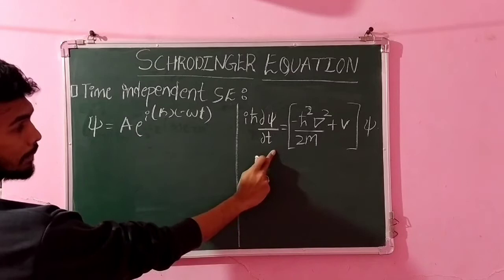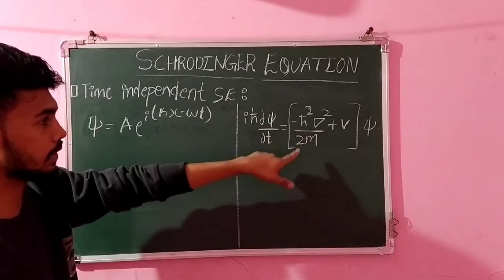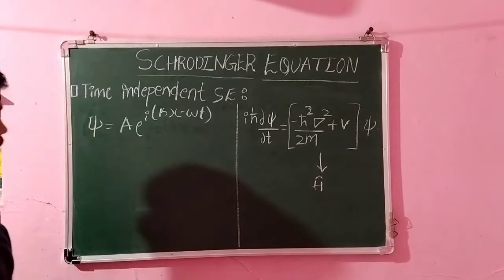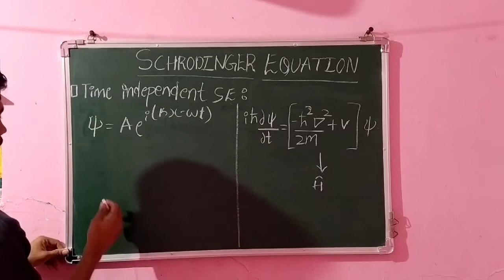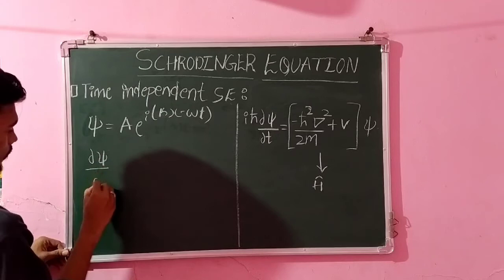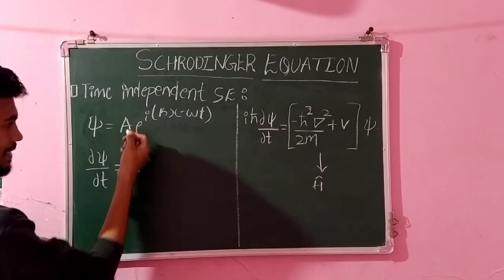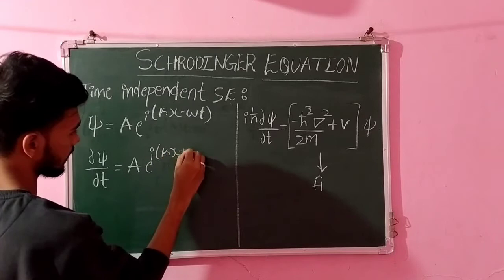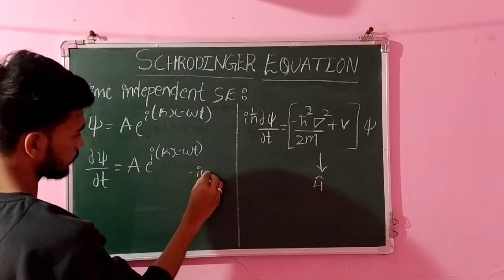As we know that this is time-dependent Schrödinger wave equation: iℏ∂ψ/∂t equals -ℏ²∇²/2m plus V of psi. Whereas this represents Hamilton operator H cap. So just differentiate this one with respect to time and substitute that equation in the time-dependent equation, so that we will get time-independent Schrödinger wave equation. So ∂ψ/∂t, we will differentiate this wave equation with respect to time. So we will get A as it is, it's a constant. So e raised to i(kx - ωt) into -iω.